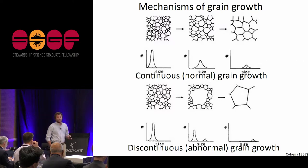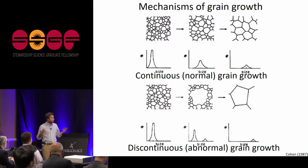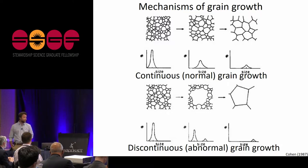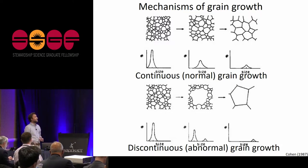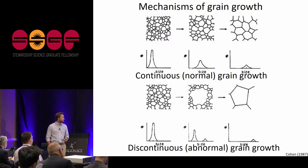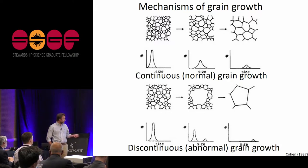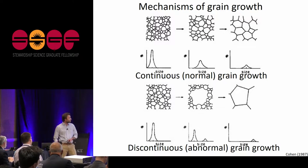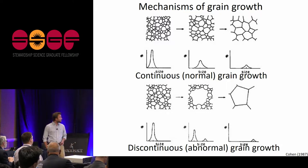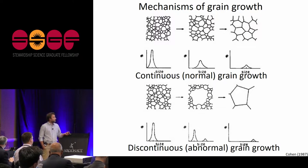In crystalline materials, grains grow at high temperature to reduce the energy of the microstructure. There are two classic grain growth regimes: continuous or normal grain growth, where the microstructure coarsens uniformly, and discontinuous or abnormal grain growth, where large grains grow at the expense of smaller grains, resulting in a bimodal grain size — both of which may be important in controlling grain size in the Earth's mantle.